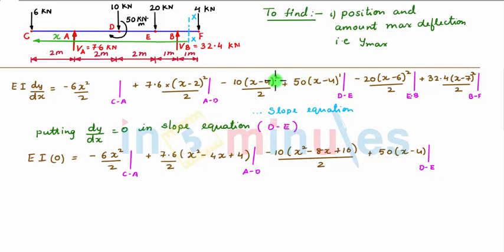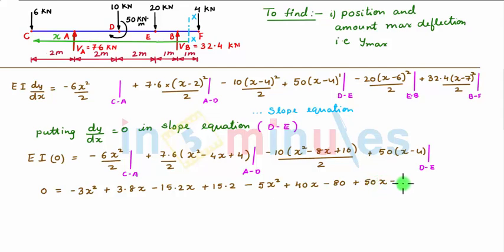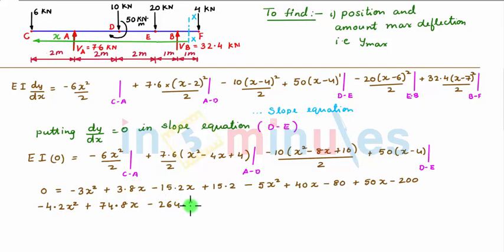We expand these terms. Upon simplification we get: 0 = minus 3x² plus 3.8x minus 15.2x plus 15.2 minus 5x² plus 40x minus 80 plus 50x minus 200. Clubbing the x² terms, x terms, and constants, we get minus 4.2x² plus 74.8x minus 264.8 = 0.